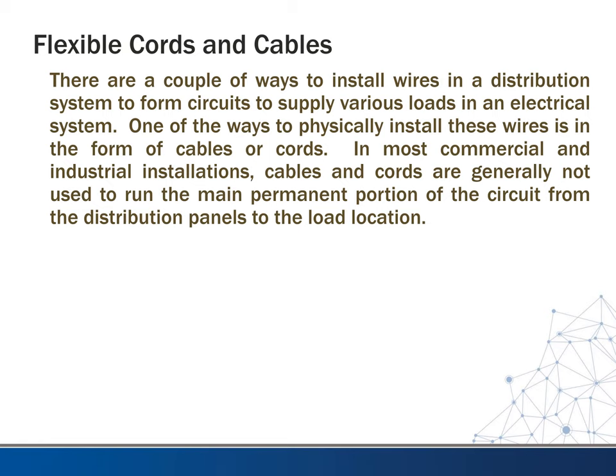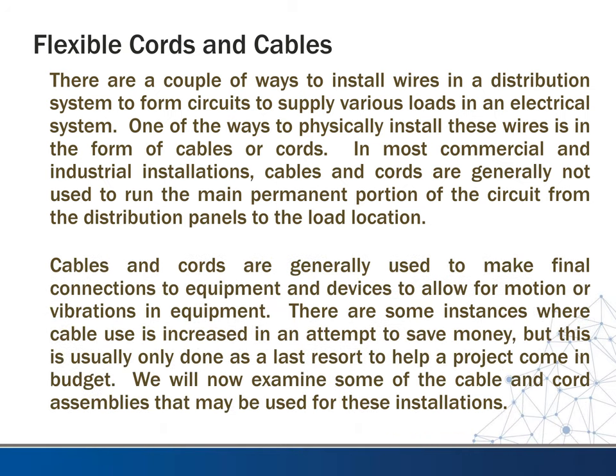There are a couple of ways to install wires in a distribution system to form circuits and supply various loads. One way is in the form of cables or cords. In most commercial and industrial installations, cables and cords are generally not used to run the main permanent portion of the circuit from the distribution panel to the load location. They are generally used to make final connections to equipment and devices to allow for motion or vibration. There are some instances where cable use is increased to save money, but this is usually only done as a last resort to help a project come in budget.